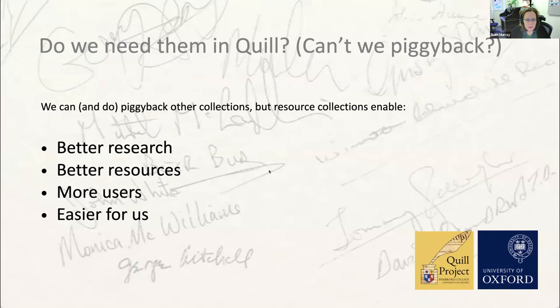It also makes it easier for us and for you. There are lots of checks that take place in data entry in the models. If Cashlin or Holly or someone else is checking your work, it's a lot easier if they can immediately see in Quill the resource item you've relied on, rather than hunting it down elsewhere. If you start by creating the resource collections, the transcriptions will be available when you start to model, and that gets rid of problems with copying text from Word into document fields, which can cause havoc sometimes.